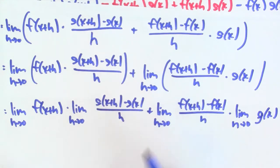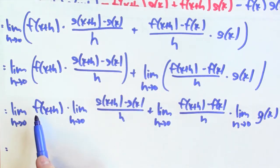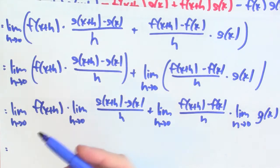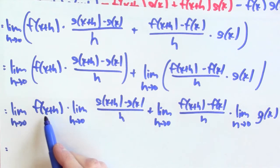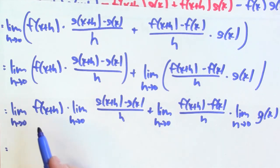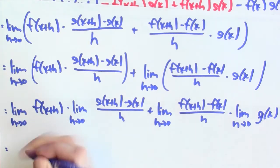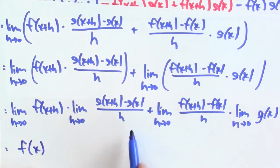These limits do exist. The first limit — the limit of f(x+h) as h goes to 0 — is actually the hardest to see. Remember, we showed that differentiable functions are continuous. This is really calculating the limit of f of something as that something approaches x. Because f is continuous (since f is differentiable), this limit is actually just f(x). That step is probably the hardest in the whole argument.